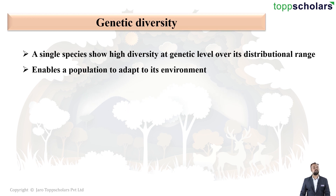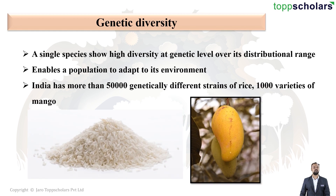This diversity at the genetic level enables the population to adapt to its environment. Obviously, the climate and weather in the high Himalayas is very different compared to the climate in the central Indian forests. So genetic diversity within the tiger population helps them adapt to their particular environments. Also, India has more than fifty thousand genetically different strains of rice and a thousand varieties of mango — these are also examples of genetic diversity.